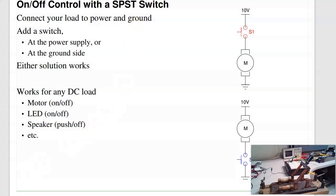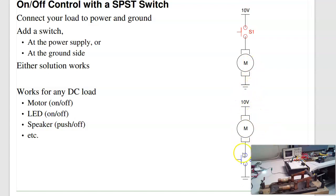It doesn't have to be a light — I can turn on and off motors, speakers, whatever you want. There are a couple ways to connect it. I can connect on the high side: if the switch is open, there's no path to ground, the motor's off; if I close the switch, I complete the circuit and the motor spins. I can also connect on the low side — either way works, as long as I break the path to ground.